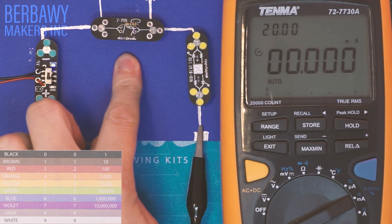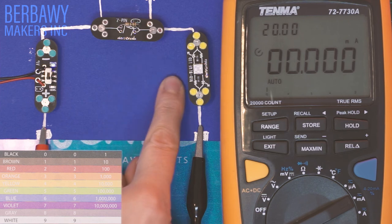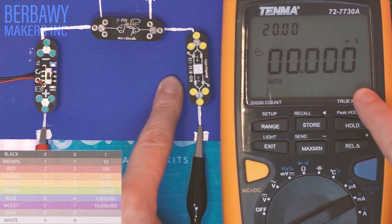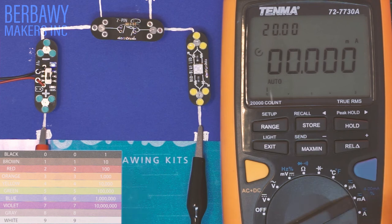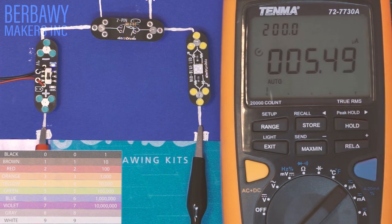Our last resistor has bands brown, black, green, which is 1 million ohms, or 1 megaohm. You can see that our LED is almost off, and our current is basically nothing. It keeps flashing between 0.001 and 0 milliamps. If we change this to microamps, you can see some numbers pop up, but again, they're very small, 5.5 microamps.